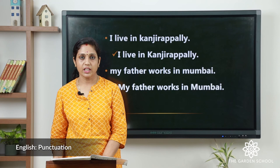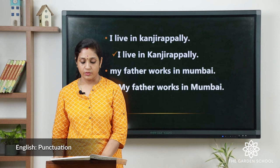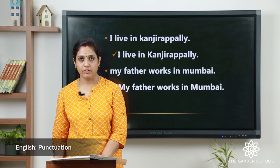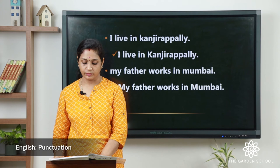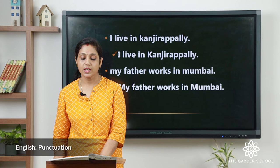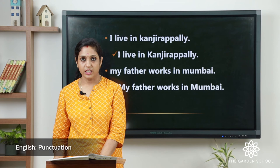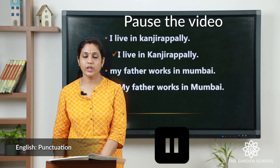Now let's move on to the writing section: look at the picture and complete the passage using words from the box. The words given in the box are: 'shining,' 'lovely,' 'butterflies,' 'bee,' and 'happy.' In the picture you can see a girl, butterflies, the sun, and a beautiful garden. Fill in the blanks: 'It is a ___ day.' 'The sun is ___.' 'The flowers are blooming.' 'There are many ___ flying.' 'There is a ___ too.' 'The girl is feeling ___.' Pause the video and complete it.